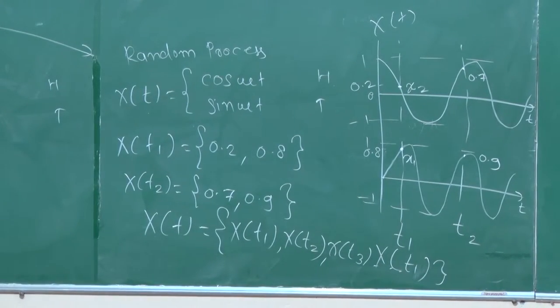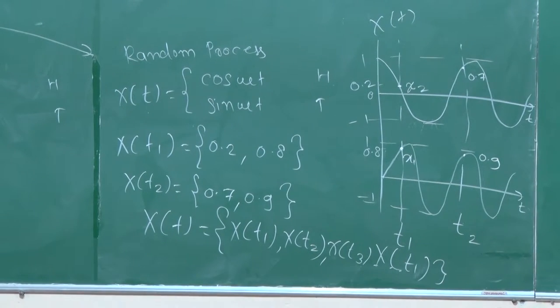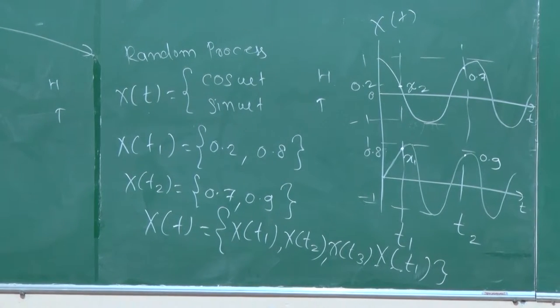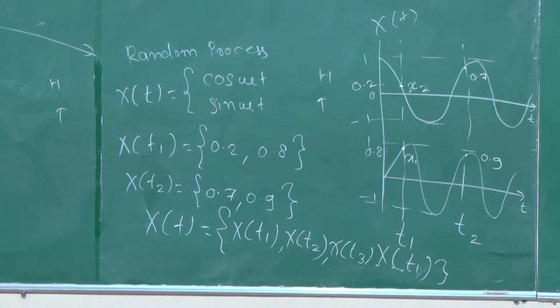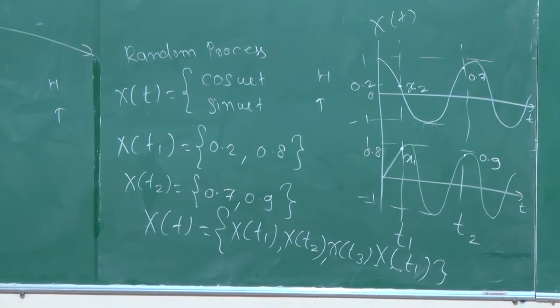What is a random process? Random process is nothing but a collection of time-indexed random variables.